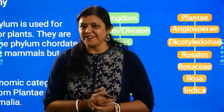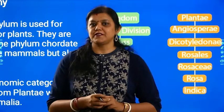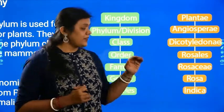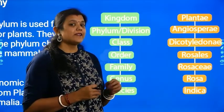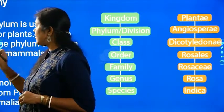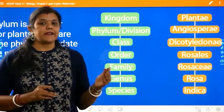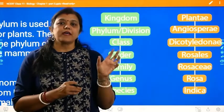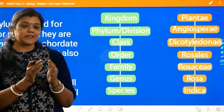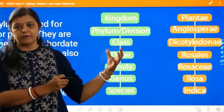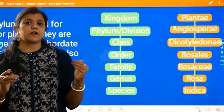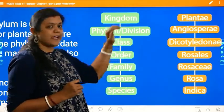Hello students, welcome back to the first chapter of 11th standard. In the previous session we discussed binomial nomenclature, the ways of classification, and the different hierarchy levels when an organism is classified. Let us quickly revise before moving to the next topic. Binomial nomenclature is a very important concept which helps us identify an organism, put them into a group, and gives us a clear idea about its evolutionary characteristics and links.